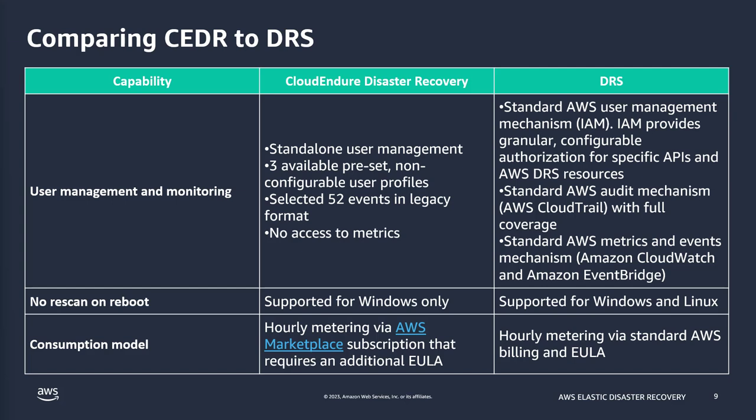For user management and monitoring, we're now using standard IAM roles. IAM users are still available, but you can also utilize IAM roles and Amazon STS for temporary credentials during installations. We have direct integration with CloudTrail, CloudWatch, and EventBridge, all directly integrated with Elastic Disaster Recovery to make it easier to manage and monitor the solution. No-scan-and-reboot was only supported for Windows in CloudEndure, but with Elastic Disaster Recovery both Windows and Linux are supported — so when you reboot a server for patching or other reasons, there's no need to rescan afterwards.